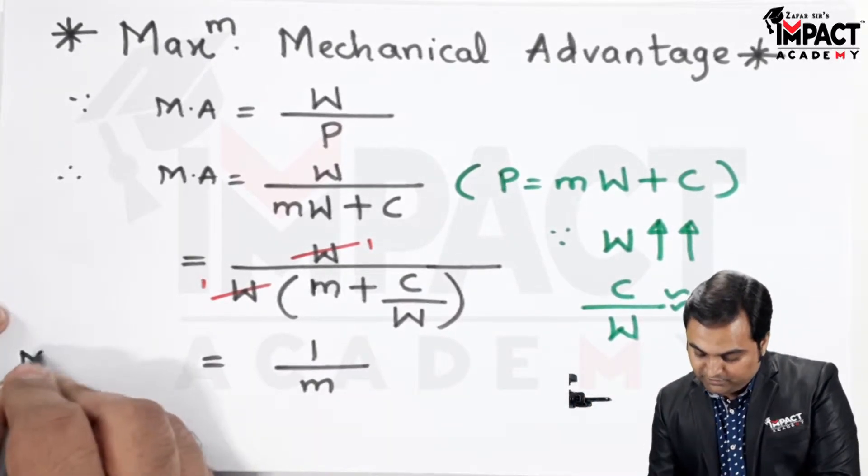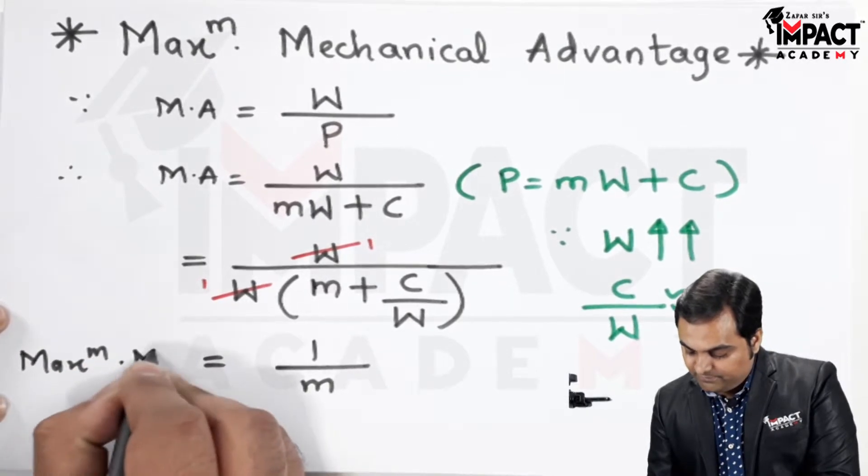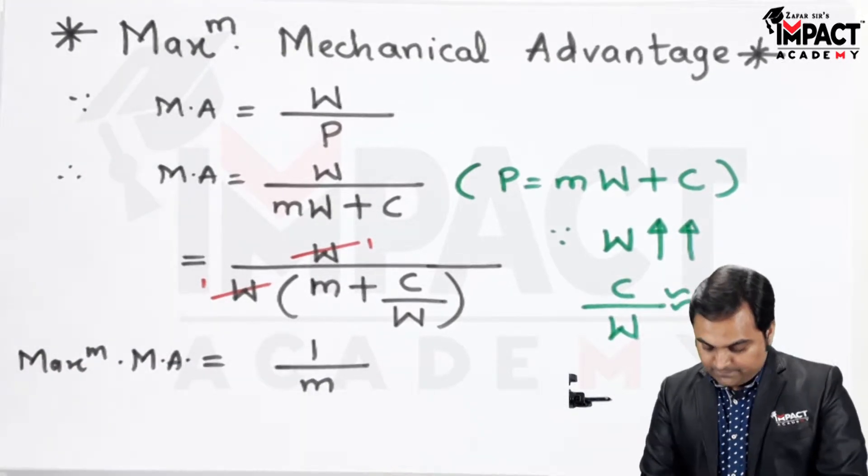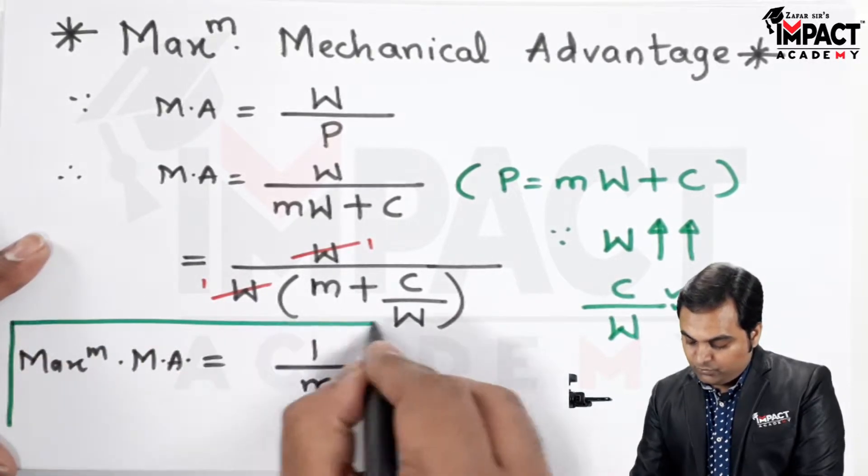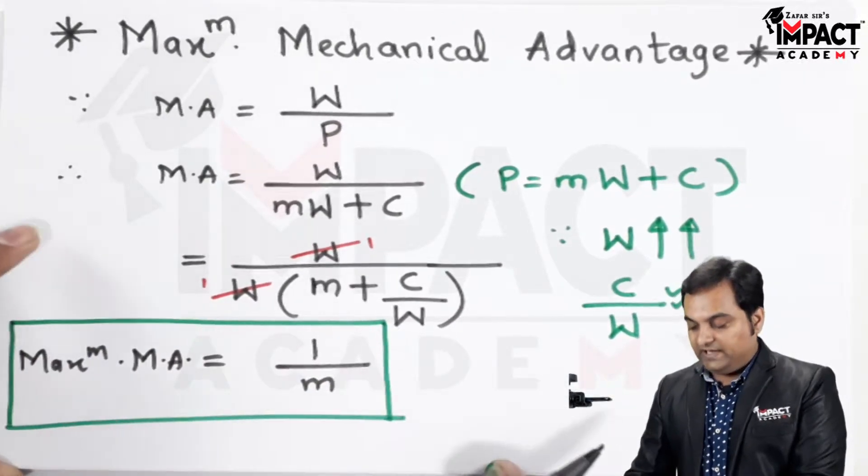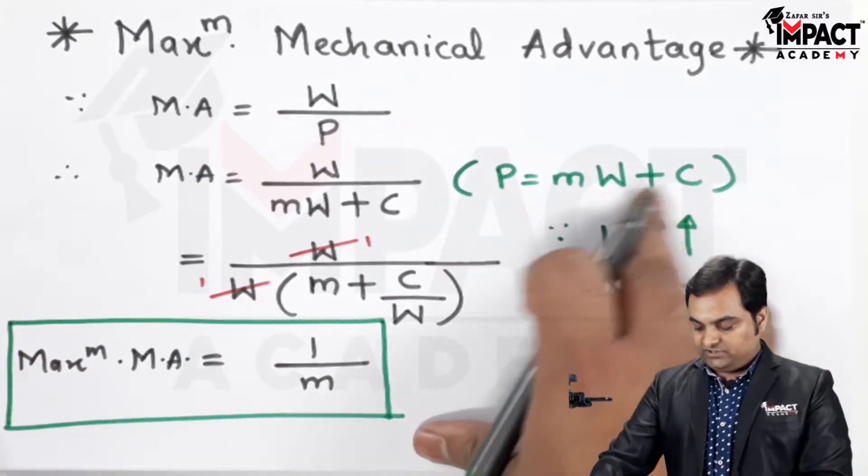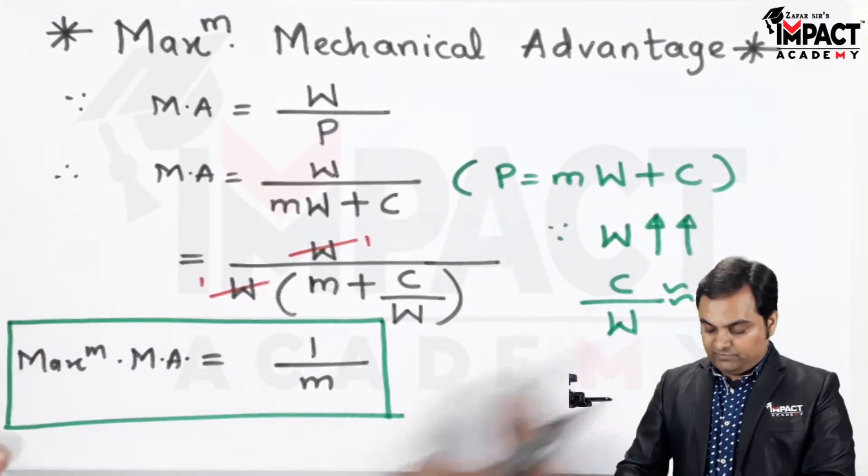This is nothing but the formula for the maximum mechanical advantage, which is given by 1 upon slope of the line, which is denoted in the law of machine.